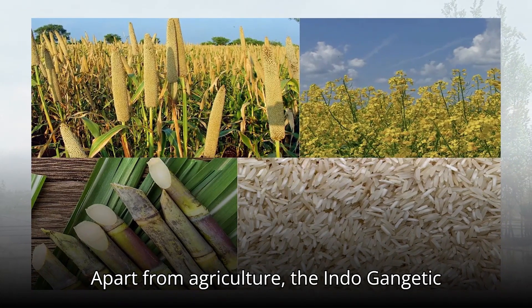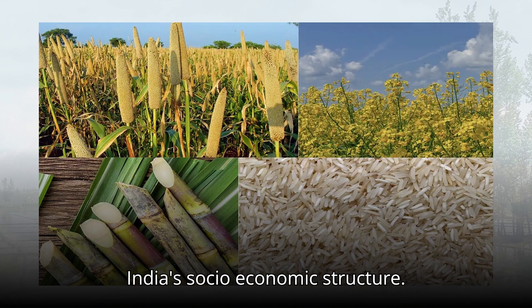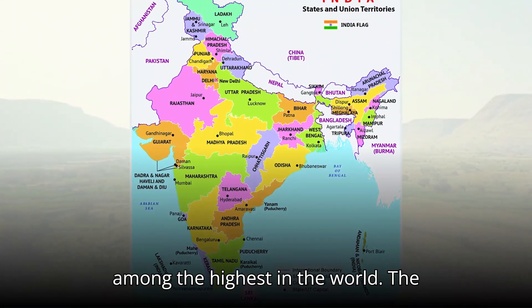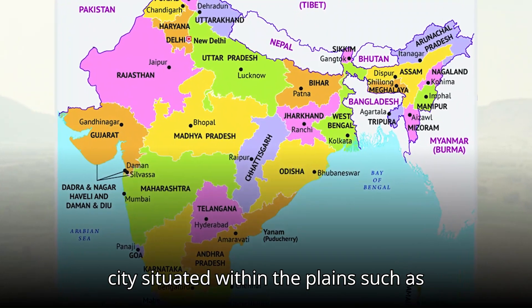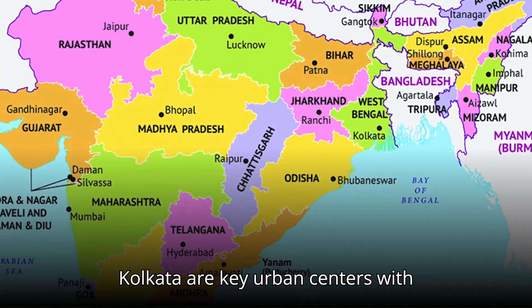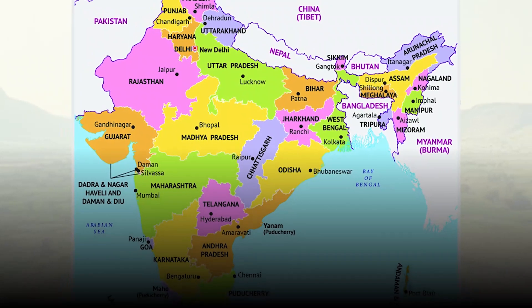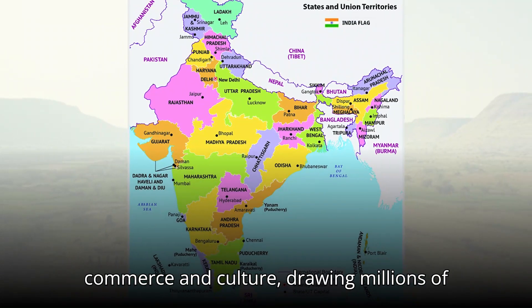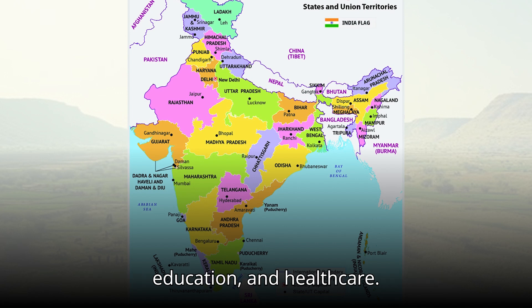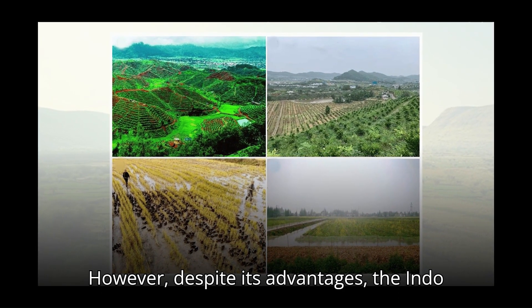Apart from agriculture, the Indo-Gangetic Plains also play a crucial role in India's socio-economic structure. The population density in this region is among the highest in the world. Cities situated within the plains, such as Delhi, Kanpur, Lucknow, Patna, and Kolkata, are key urban centers with growing industrial and service sectors. These cities act as hubs for trade, commerce, and culture, drawing millions of people seeking employment opportunities, education, and healthcare.